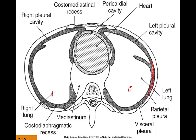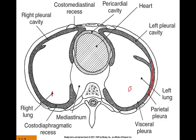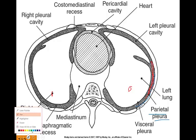The pleural cavity is divided into two layers. The outer layer is called the parietal pleura, which is continuous with the thoracic wall and diaphragm and moves with these structures when you take a breath. The inner layer is the visceral pleura, which closely covers the lungs and continues into the fissures to cover individual lobes.